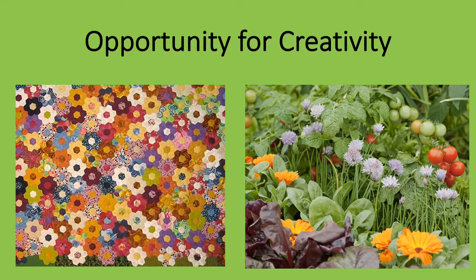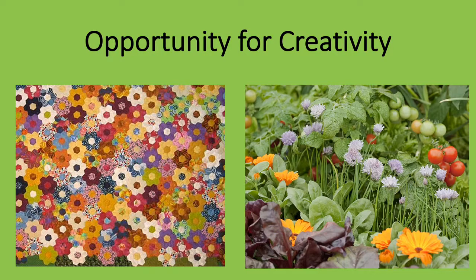They have another important similarity: they both offer an opportunity for creativity. That's why even the most utilitarian of vegetable gardens often includes a small patch of flowers, or at least an ordering of plants that brings beauty to the garden. And a patchwork quilt clearly made out of entirely scraps or used clothing will often show evidence of attention to making the combination of patches attractive. The anonymous quilter who stitched this quilt has organized the hexagon pieces to create flowers. So many quilters organized them that way that by the 20th century, this had become a quilt pattern known as grandmother's flower garden.